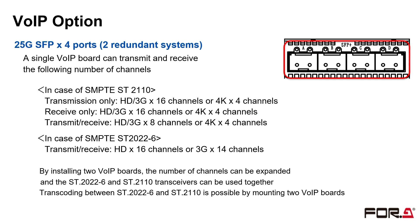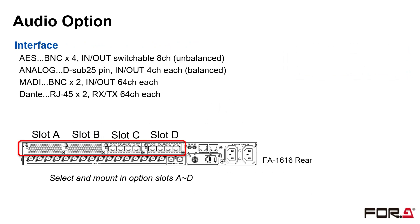By mounting two VOIP boards, the number of channels can be expanded and ST2022-6 and ST2110 can be transcoded. For audio options, select and mount them in option slots A to D. AES, analog audio, MADI, and Dante interfaces will be released.